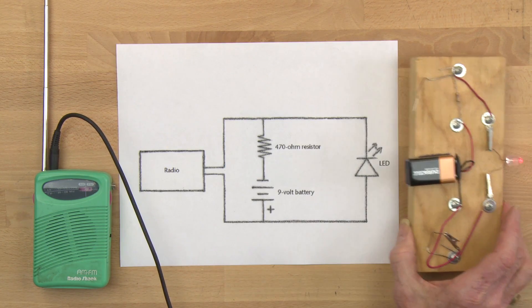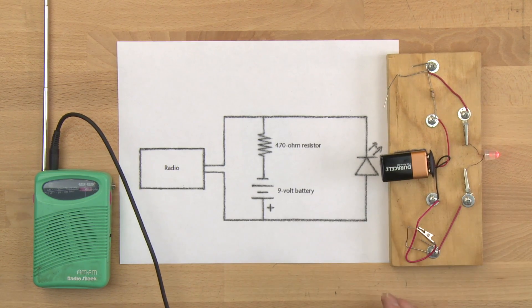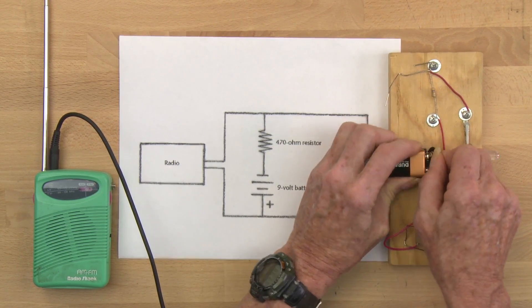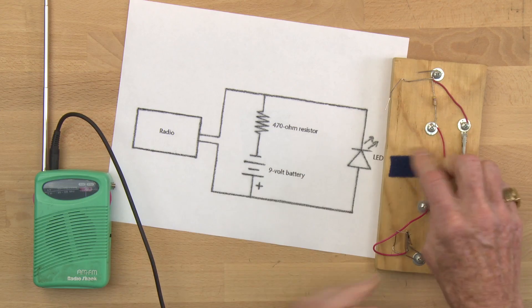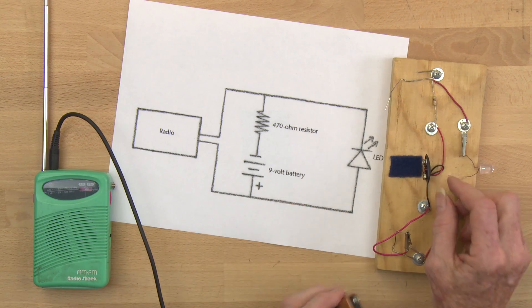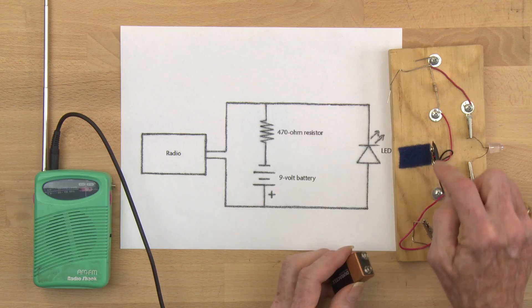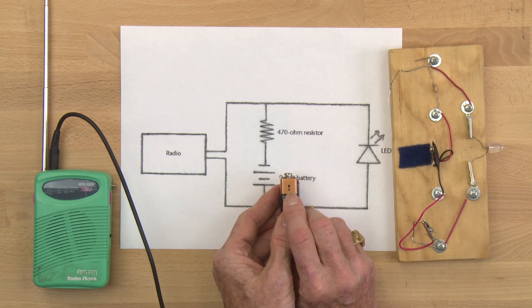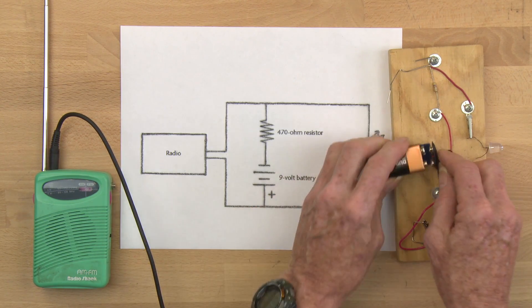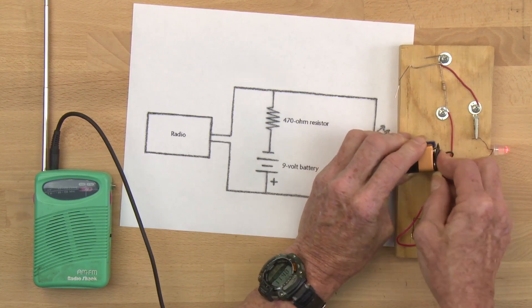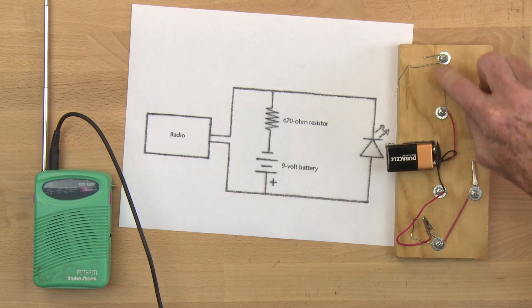So we need that resistor. Now the 9 volt battery snaps into this battery holder. I use Velcro to hold it in place on my breadboard. And the battery holder is color coded. The positive terminal of the battery goes into the red lead on the battery holder. So this red lead is the positive terminal.